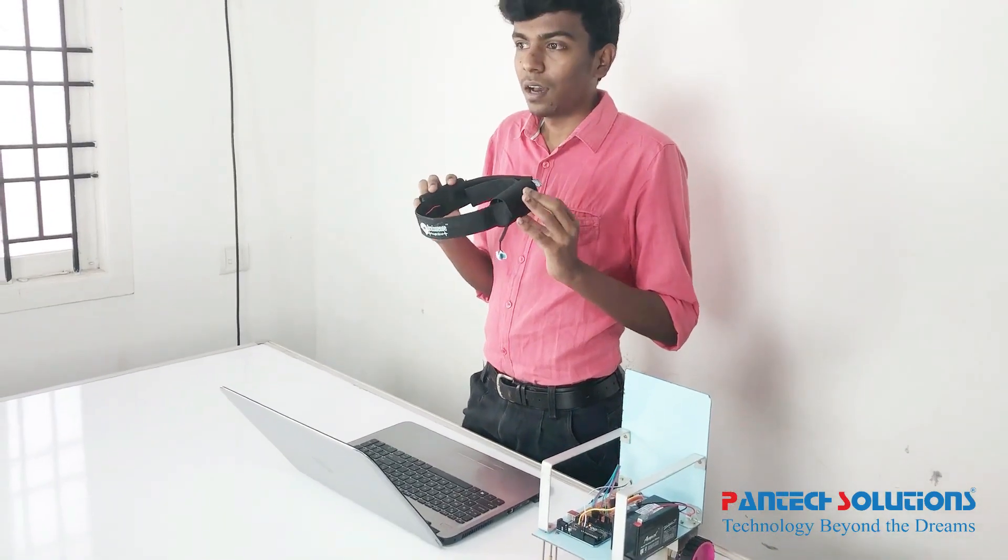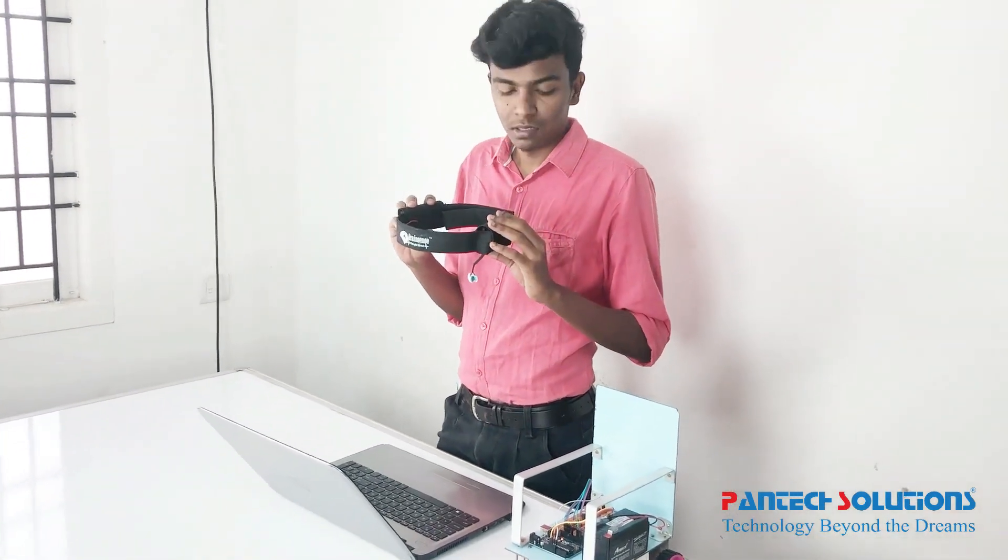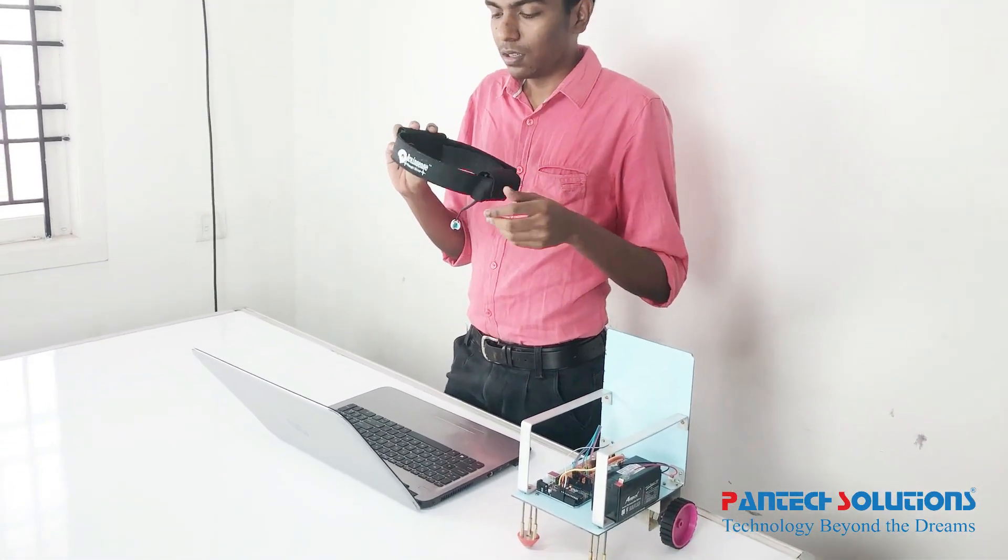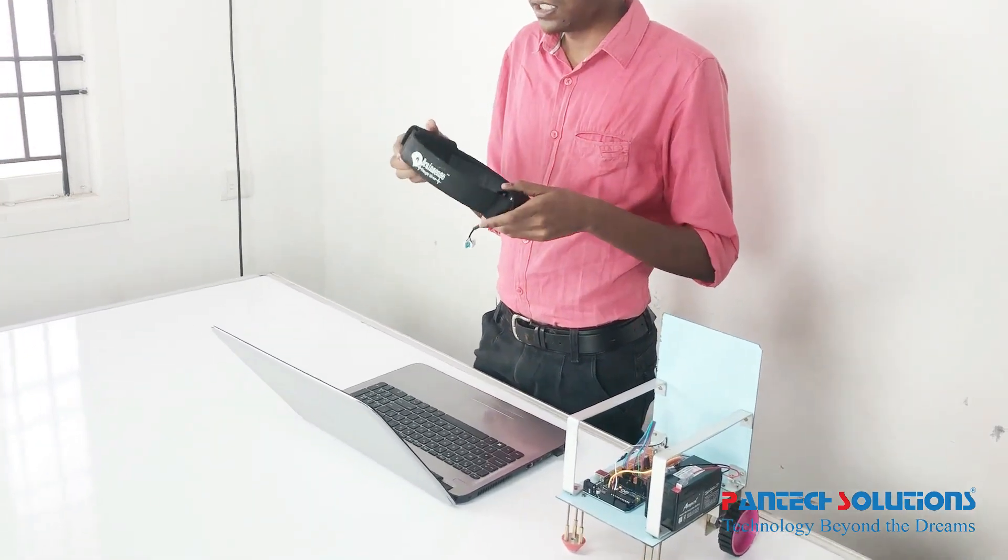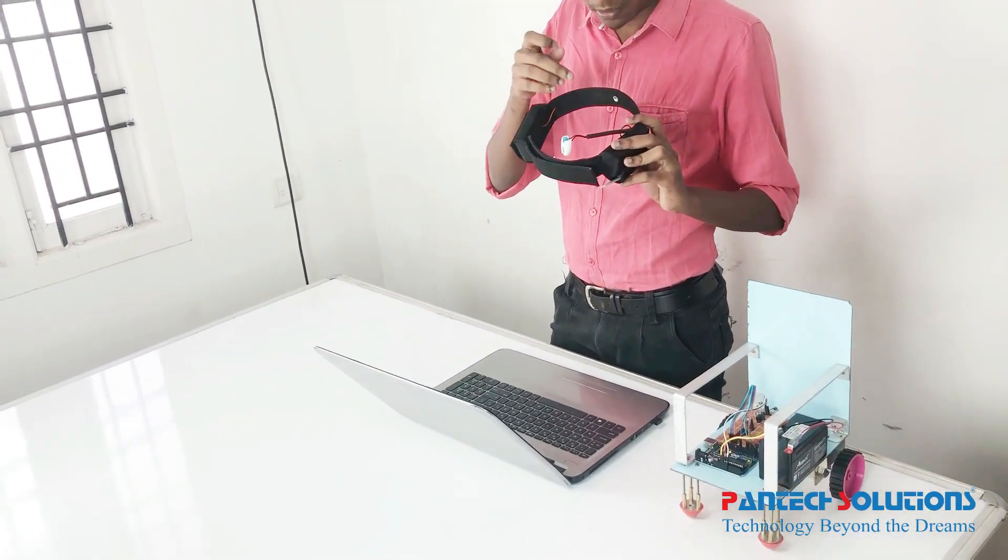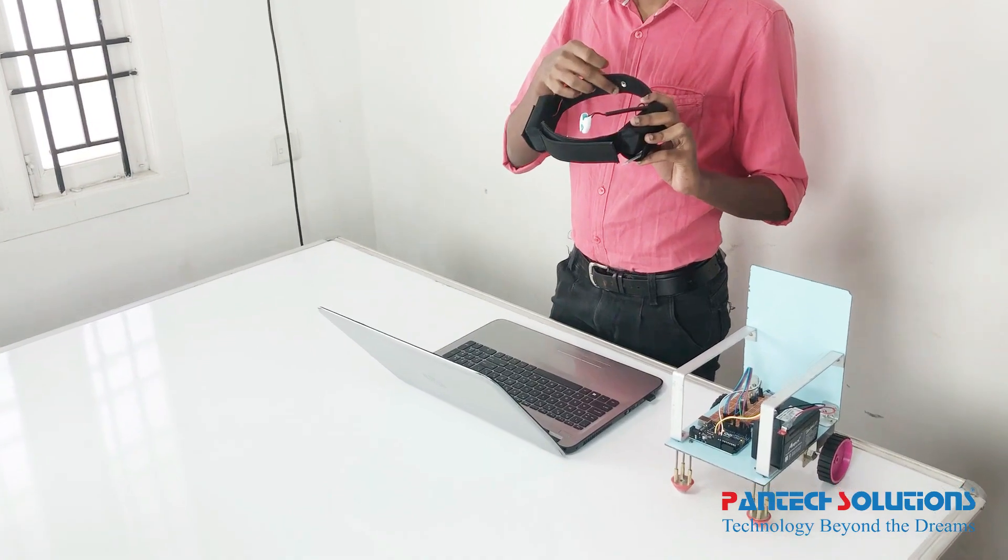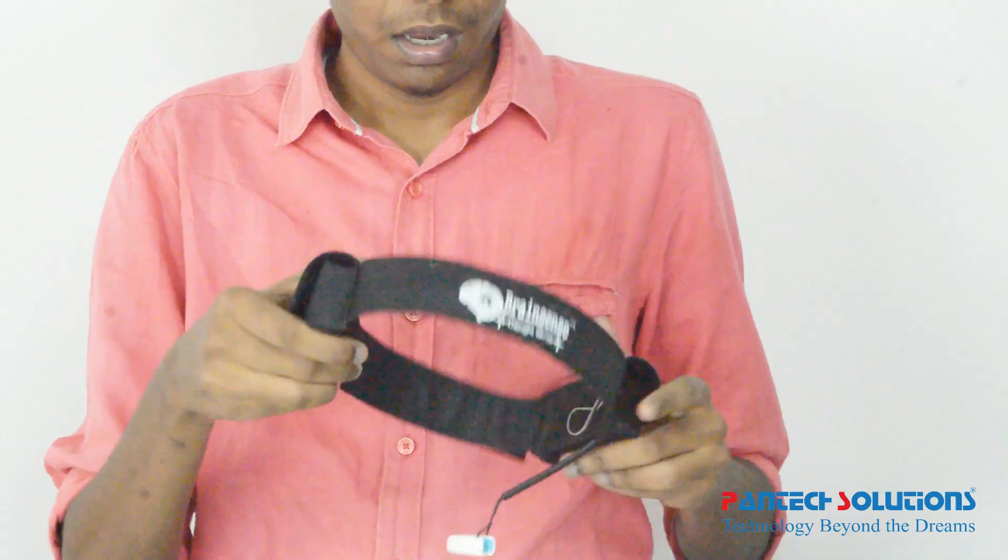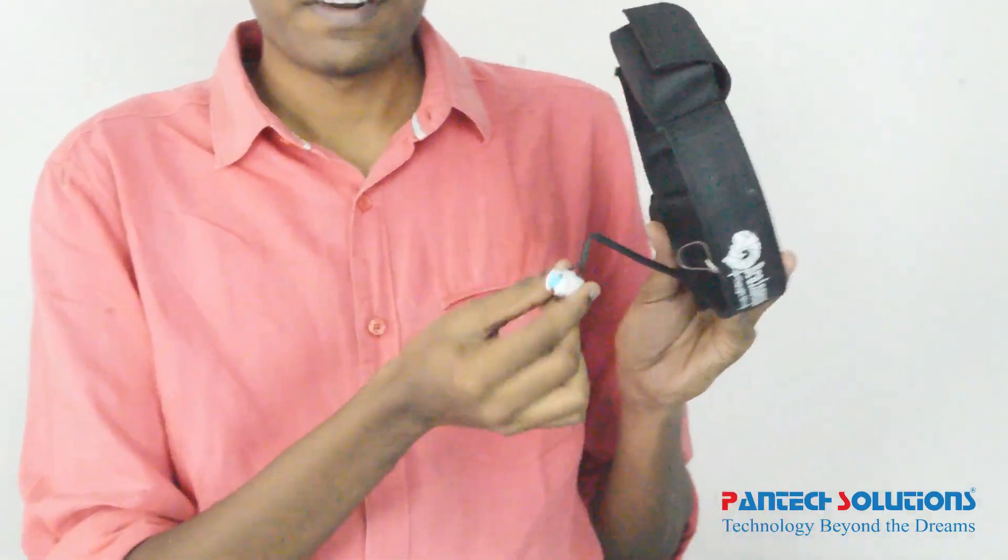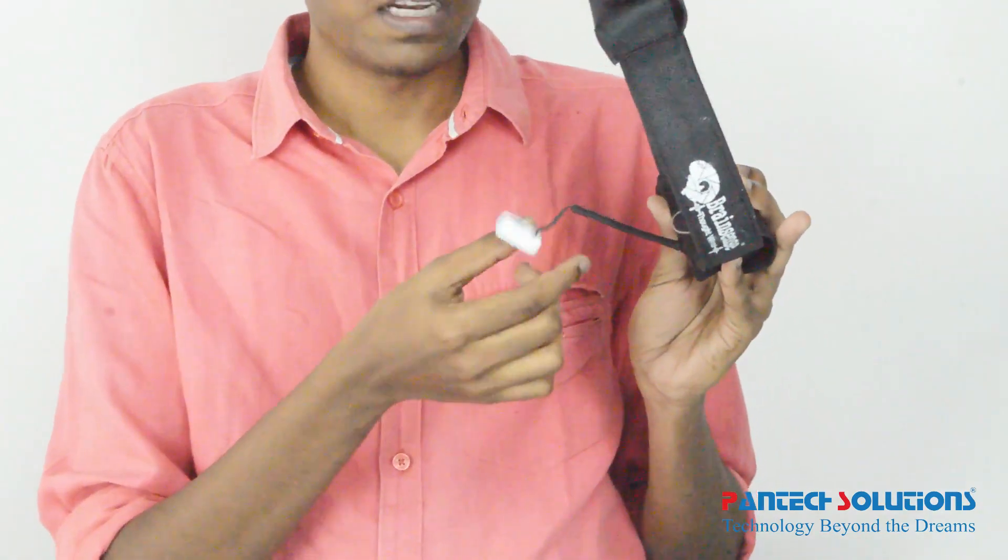By using this device, I am going to extract my brain wave to control this miniature wheelchair. This is BrainSense, an EEG machine which contains two electrodes. One is a main electrode which will be placed on my forehead. This one is a reference electrode which will be clipped to my ear.